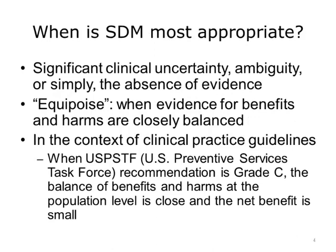Shared decision making is best used for problems involving clinical uncertainty, ambiguity, or simply an absence of evidence. It is also appropriate in situations of equipoise, which is when evidence for benefits and harms is closely balanced. It can also provide the structure for providers to discuss clinical practice guidelines, particularly guidelines with U.S. Preventive Services Task Force Grade C recommendations — meaning that at the population level, the balance of benefits and harms is very close, and the magnitude of net benefit is small. With transparency about evidence, patients, together with their providers, can make decisions about guidelines as they apply to individual risk profiles, preferences, and contexts.